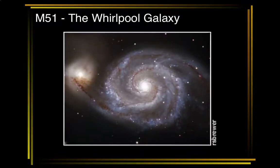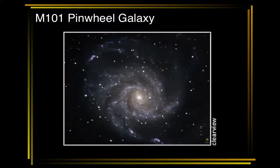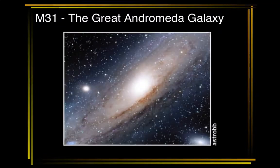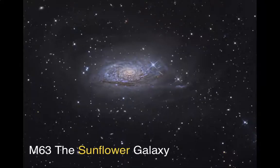M51, the Whirlpool Galaxy — they were actually making sketches of this all the way back in the 1800s before they even knew what they were looking at. The Earl of Ross made beautiful sketches of the Whirlpool Galaxy. M101, the Pinwheel, is up near the Big Dipper in Ursa Major. And our big sister galaxy, Andromeda — we'll talk more about that in a little bit.